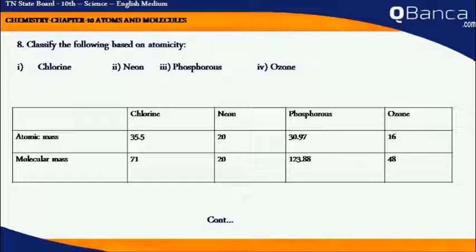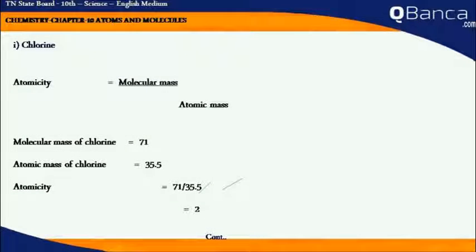Based on the atomicity it was classified as Neon, Chlorine, Ozone and Phosphorus. The atomicity calculation can be done by using the molecular mass divided by the atomic mass.